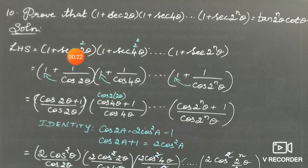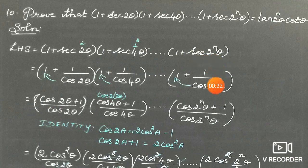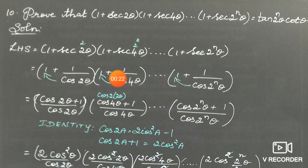Let's see the proof from the left hand side. Each secant term is converted using the reciprocal identity: sec2θ = 1/cos2θ, sec4θ = 1/cos4θ, and so on up to sec(2ⁿθ) = 1/cos(2ⁿθ). Taking the LCM, we get (cos2θ + 1)/cos2θ, (cos4θ + 1)/cos4θ, and so on up to (cos2ⁿθ + 1)/cos2ⁿθ.